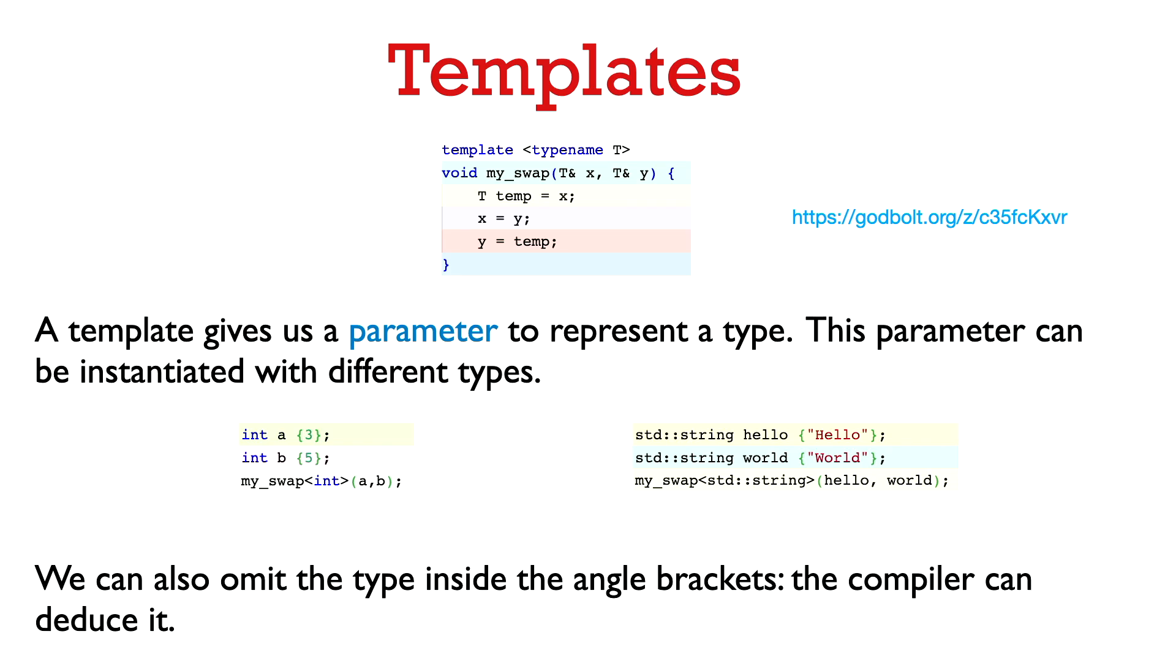Okay, so here's an example of a templated swap function. So the syntax is just before the function, we say template and then in angle brackets typename T. Now typename is a special keyword. You can also use class there. T is just an arbitrary name. So it's quite common to use T, but you can use anything else. You can use something more descriptive if you want. And T is basically just going to stand for a type. So now we can use T in the definition of the function. And later on that can be instantiated with different types.